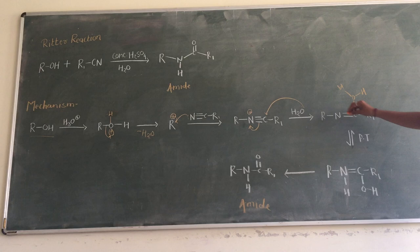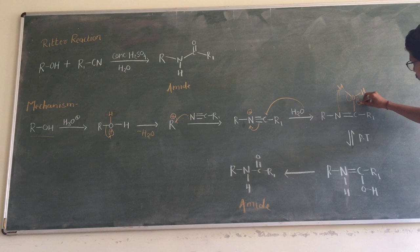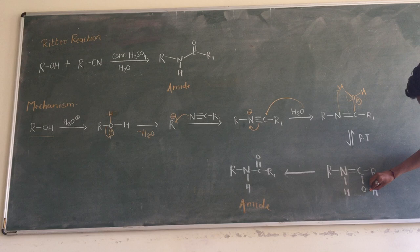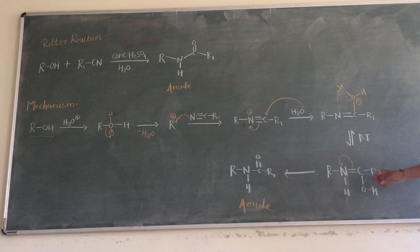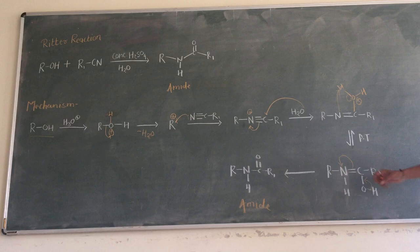The proton transfer takes place. The nitrogen lone pairs abstract this hydrogen. The positive charge will be stabilized and the hydrogen will be shifting here. This bond will be shifted. Nitrogen gets its lone pair with minus H plus to give the product, the amide.